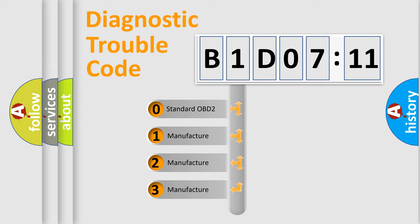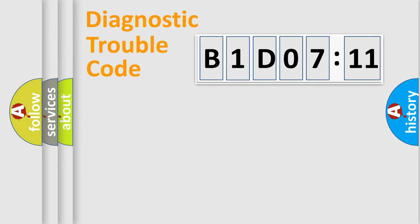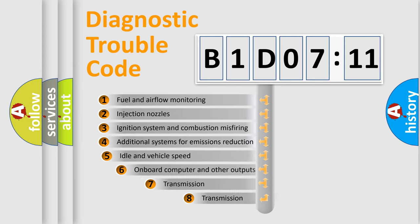If the second character is expressed as zero, it is a standardized error. In the case of numbers 1, 2, 3, it is a more specific expression of the car-specific error.